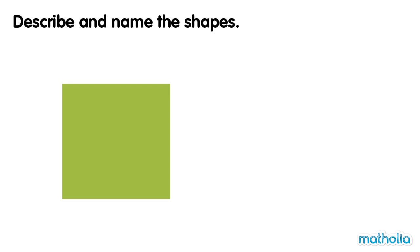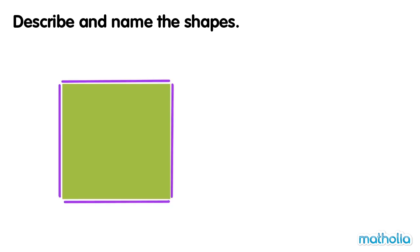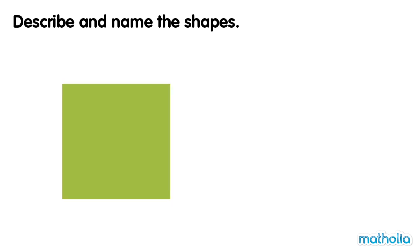Describe and name the shapes. This shape has four corners and four sides. All of the sides are the same. This shape is called a square.